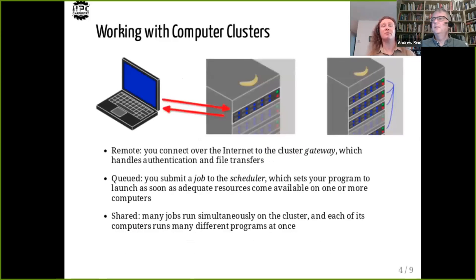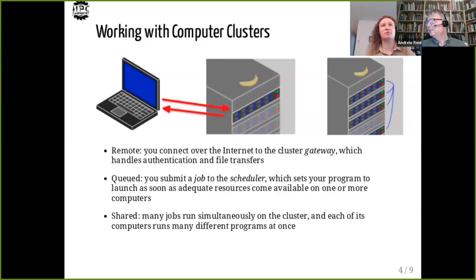While your computer may have high-performance components, high-performance computing usually refers to clusters of computers. Clusters are inherently shared resources. Each computer runs many programs at once on behalf of several different users, and large programs are distributed across several computers to break up the load. From your computer, you access a cluster over the internet through a gateway computer. Rather than launching your program directly, you must request an allocation of processors, memory, and time. A scheduler determines whether one or several computers can satisfy your request and the soonest time slot when the resources are expected to become available. If nobody else is using those computers, your program will launch immediately; otherwise it enters a queue.